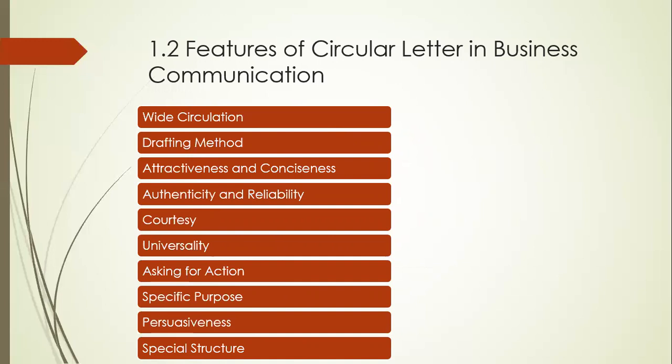What will be the features of a circular letter? Wide circulation — a circular letter is meant to be circulated among mass people. Then attractiveness and conciseness — since your message will be communicated with mass people, it should be concise and complete: short, but very understandable. The circular letter should be authentic, reliable, courteous, asking for action, with specific purposes, persuasiveness, and a special structure. Remember: circular letter will be circulated among a huge number of people, and it will be short but complete.